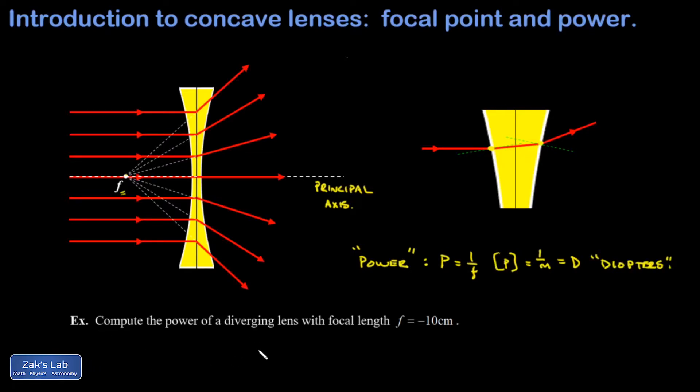So I put a simple example in here about diopters. Compute the power of a diverging lens with focal length negative 10 centimeters. So we're already introducing some of the sign conventions here. A diverging lens gets a minus sign on its focal length, and that's true for computing its power as well. So I get 1 over f. That's 1 over, in the right units, 0.1 meters with a minus sign. So I get a power of negative 10 diopters.